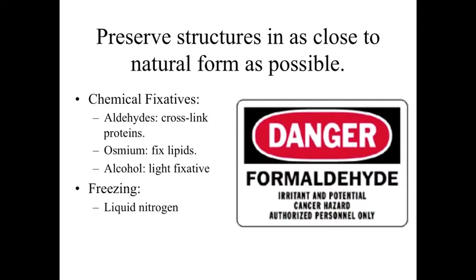We want to preserve the structures within our biological organism as close to natural as possible, so we need to fix it in a state where it hasn't rotted, decayed, or broken away — where we can look at it under the microscope and see something that looks similar to what it would look like in real life. There are two main types of fixatives. We can use chemical fixatives: aldehydes like formaldehyde and glutaraldehyde, which cross-link proteins and link them in place. We can use osmium, a heavy metal which fixes lipids. We can also use alcohol, which is a lighter fixative but still preserves the tissue.